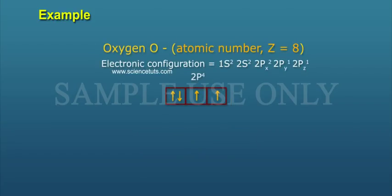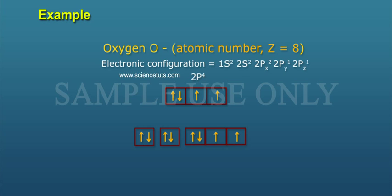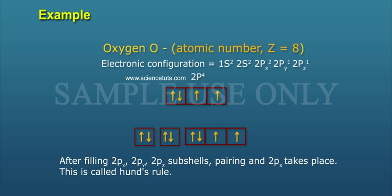Oxygen O, atomic number Z equals 8. Electronic configuration: 1s² 2s² 2px² 2py¹ 2pz¹. After filling 2px, 2py, and 2pz subshells with one electron each, pairing in 2px takes place. This is called Hund's rule.